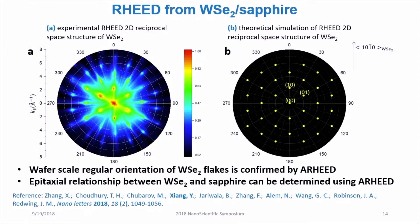This verifies that the regular orientation of the tungsten diselenide flakes is not only true in the local region as indicated by AFM, but also true at the wafer scale.